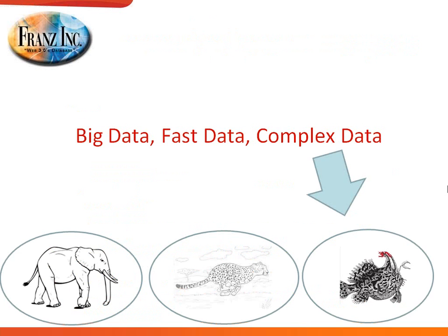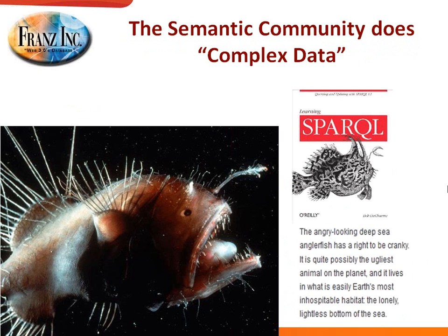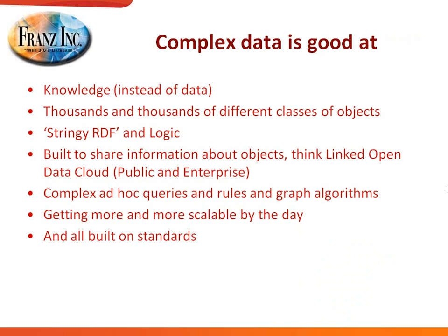I talked about three classes of databases and started with complex data. Complex data is a little bit of a marketing term, but in the semantic community we know that what we do is complex data. O'Reilly came out with a fantastic book about SPARQL, the query language for the semantic web. We in the semantic web community know that complex data is really good at knowledge rather than raw data. When you need to represent thousands of different classes of objects, where every object might have a different hierarchical relationship and different predicates, it would be almost insane to do it in a relational database, but triple stores are really good at many, many types of objects.